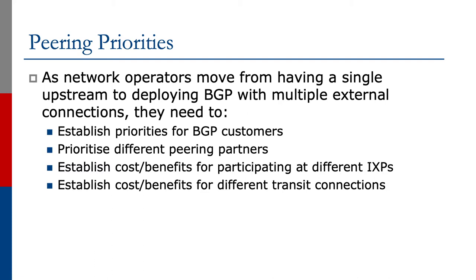We need to establish priorities for BGP customers. We need to establish priorities for different peering partners, because some partners might be more significant than others. And we need to establish cost or benefits for participating at different exchange points, because it's quite common for the larger operators to participate at more than one internet exchange point. We also need to establish the cost or benefits for different transit connections.